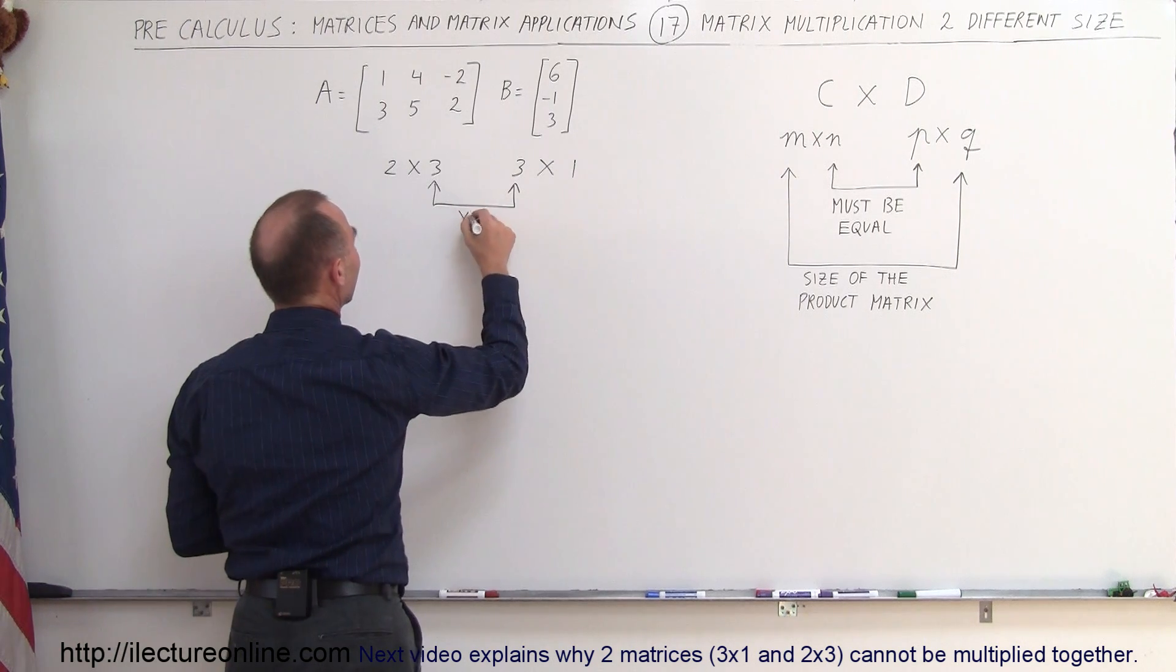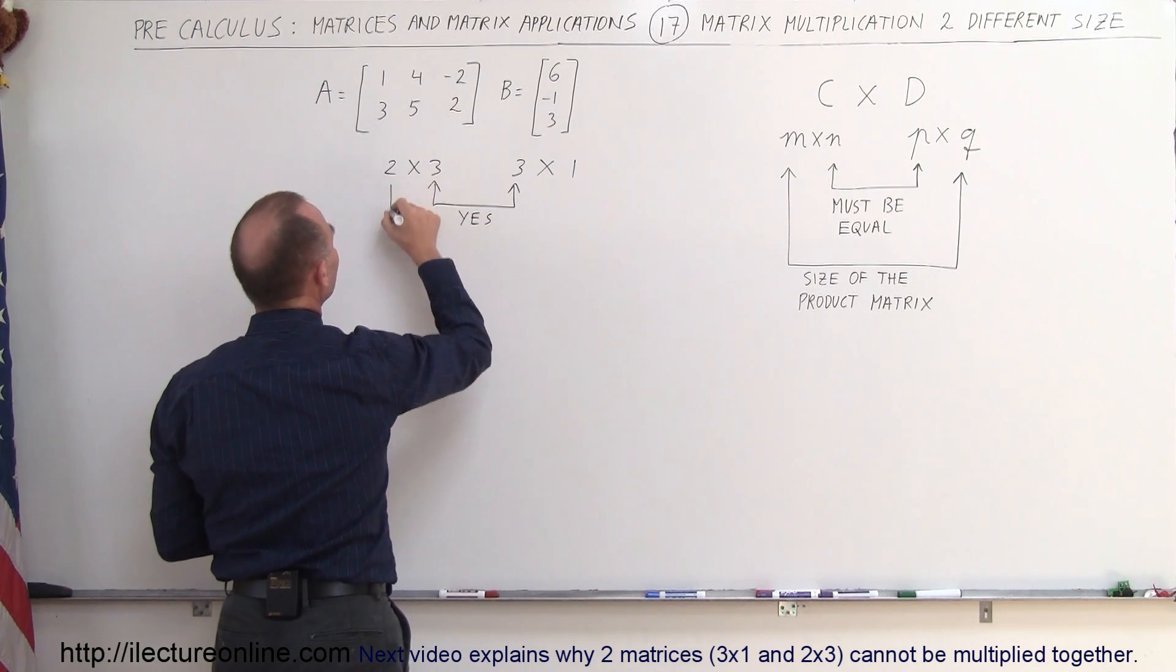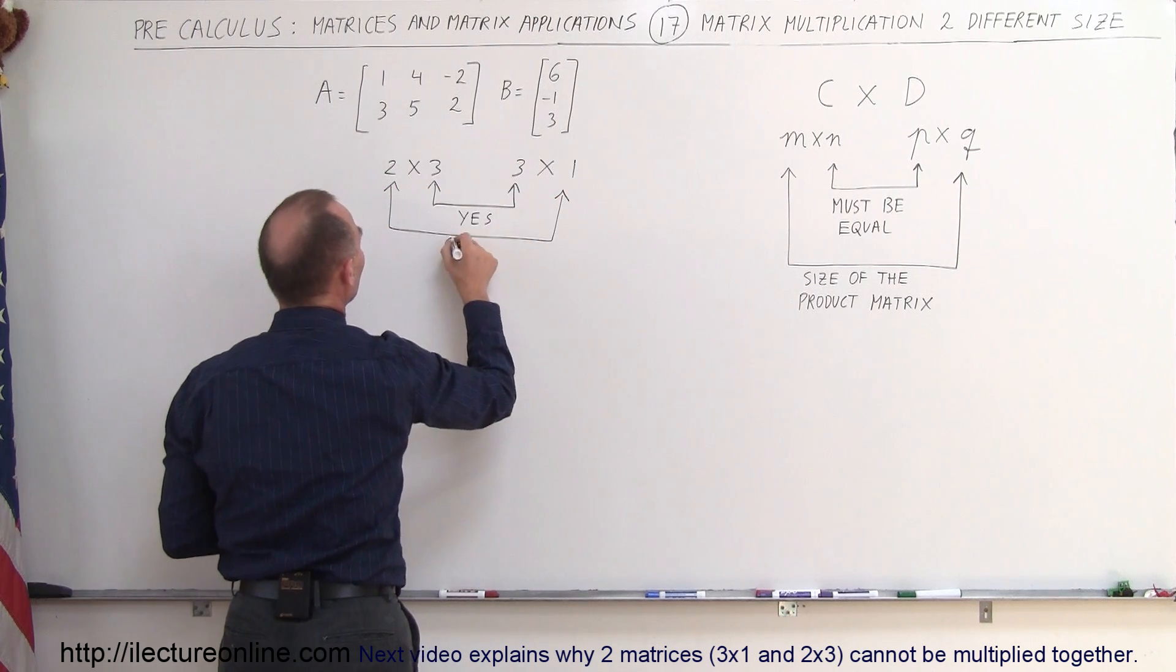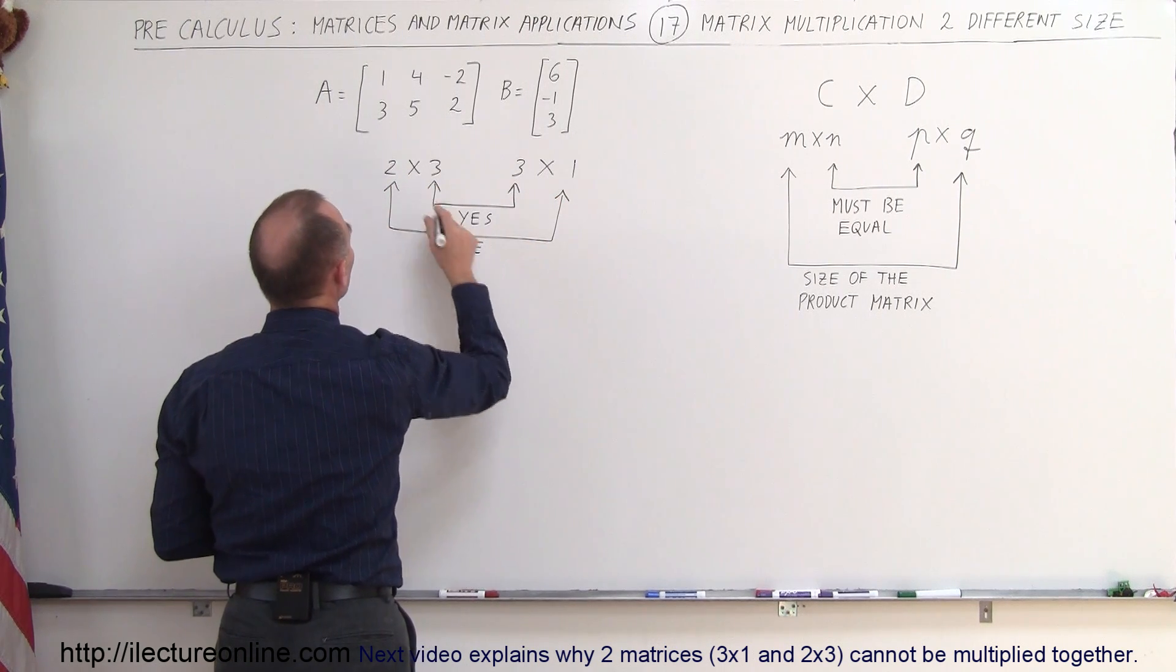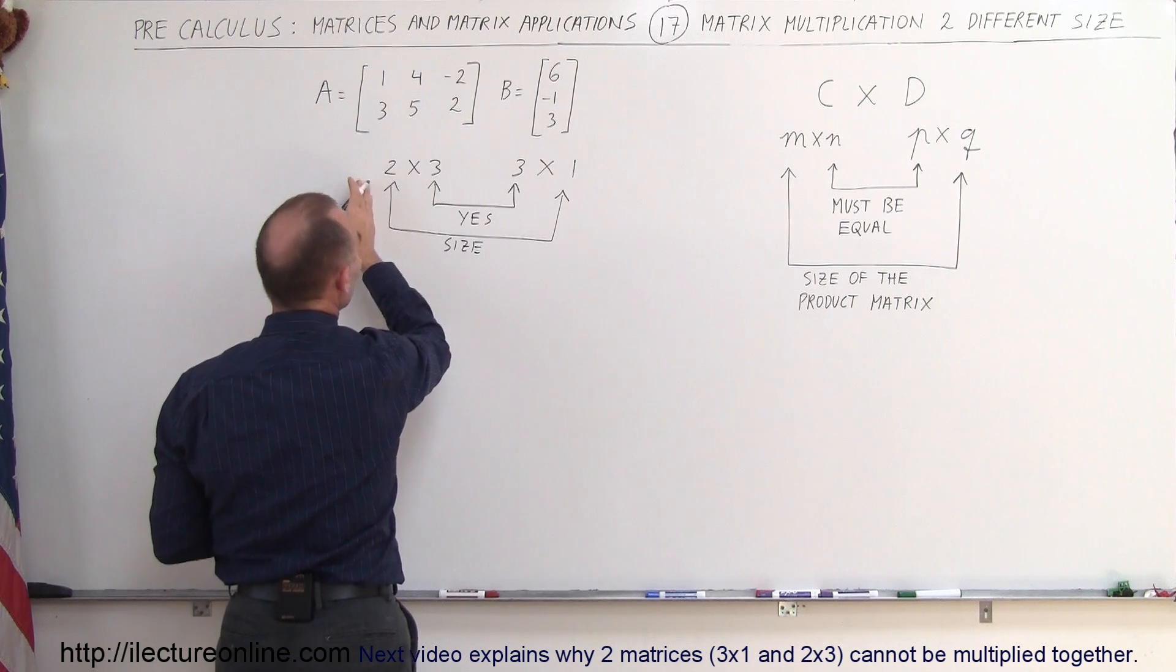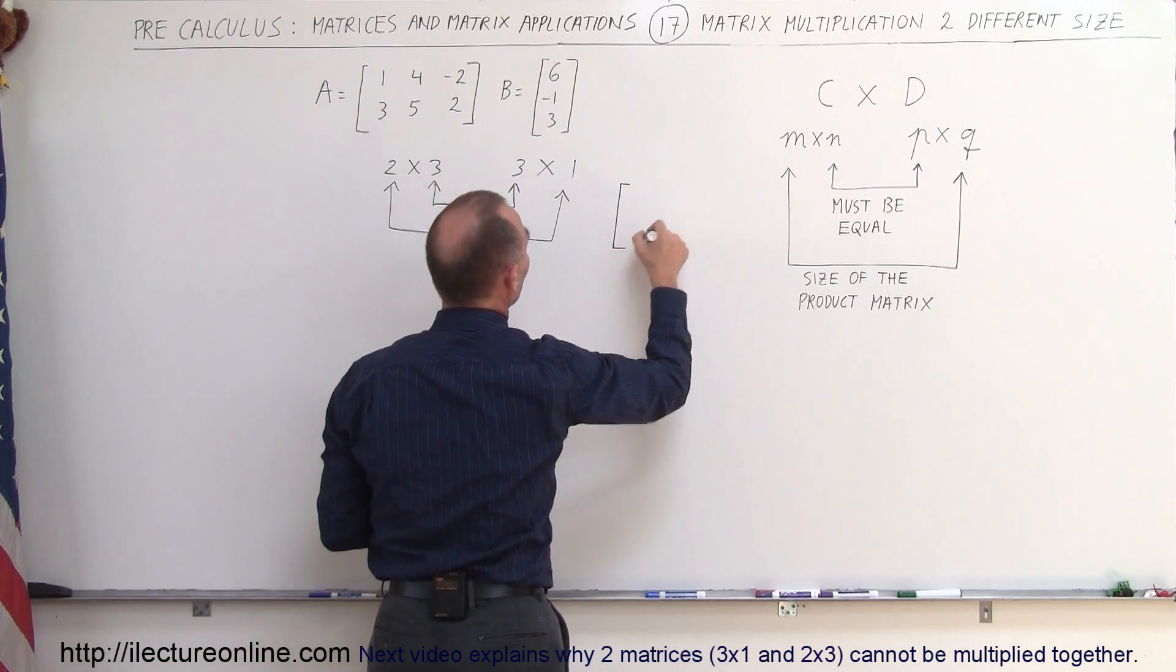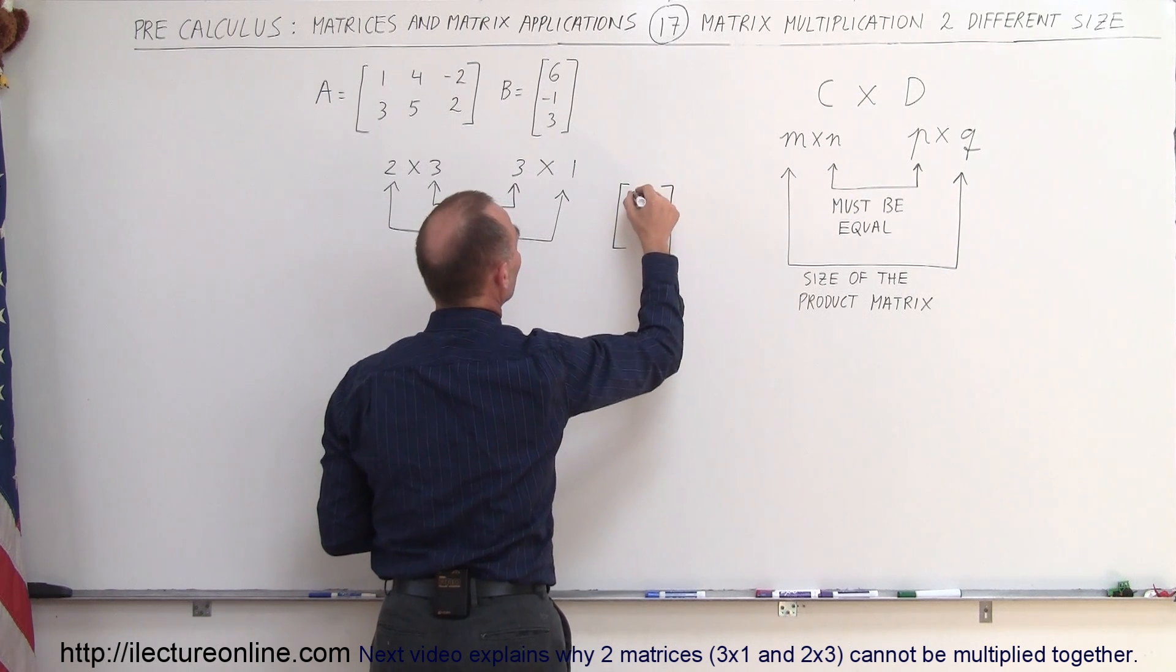So you say, yes, it's possible. And secondly, the size of the resulting product matrix, so the size will be a two, that will be a two row times one column matrix. So two row times one column matrix means that you'll have a matrix with two rows like this, one row, here's the second row, and simply one column.